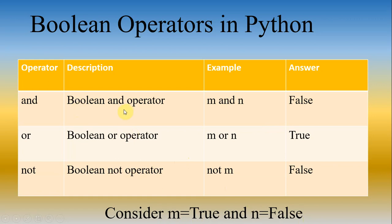First, let us understand the Boolean and operator. The Boolean and operator returns true only if both the values are true; otherwise it returns false. For example, m is true and n is false, so the Boolean and operator returns false. For it to return true, both m and n should have been true.